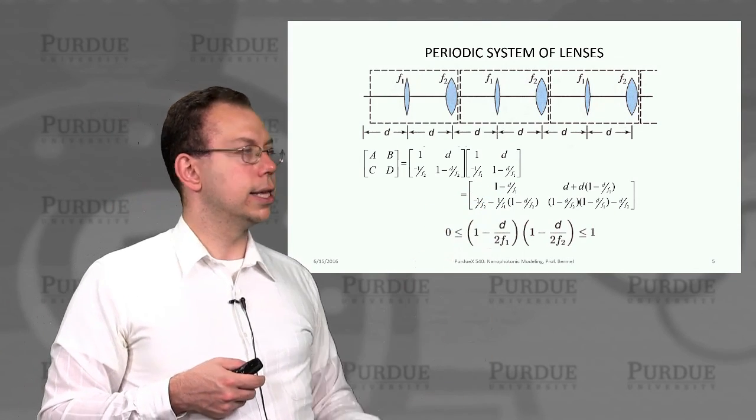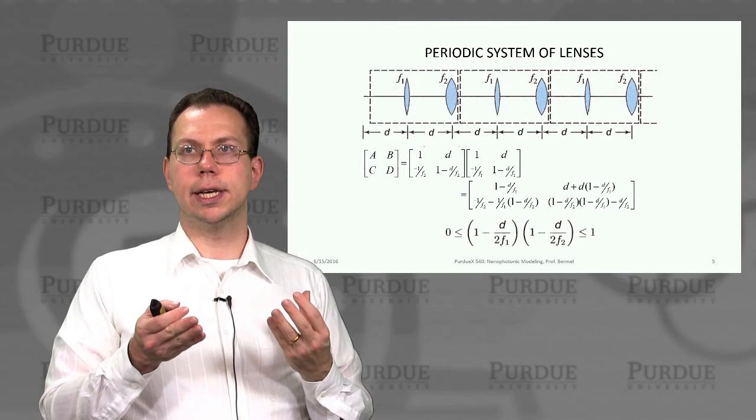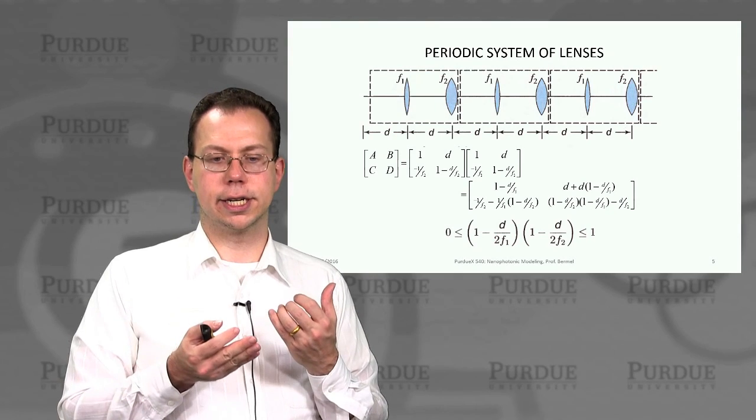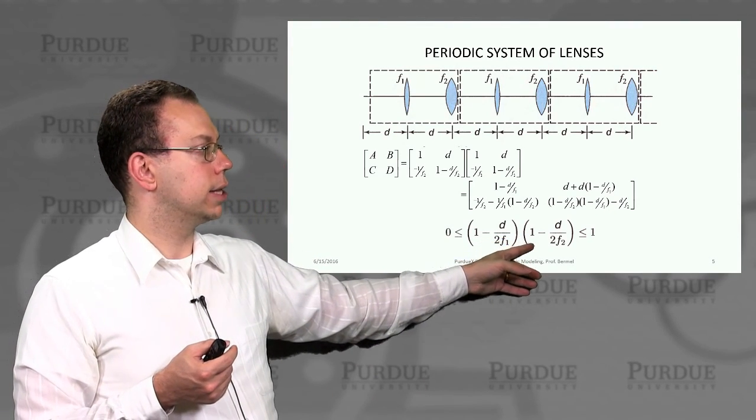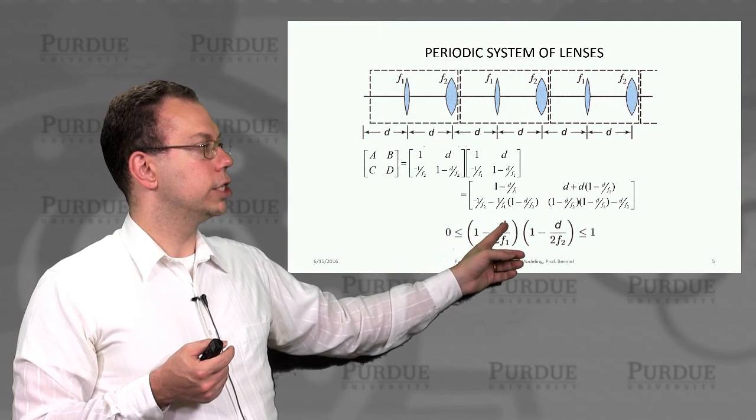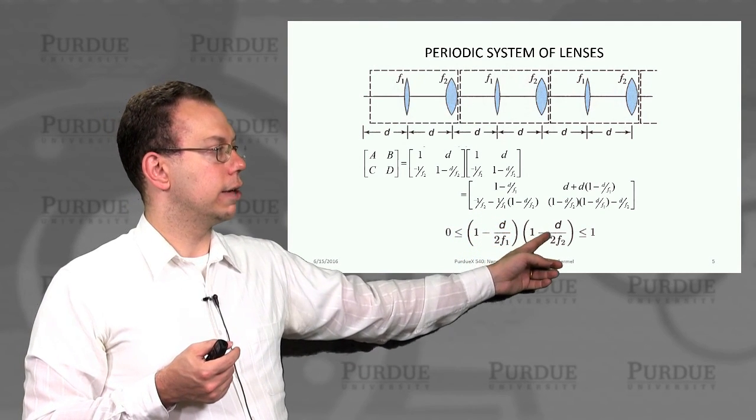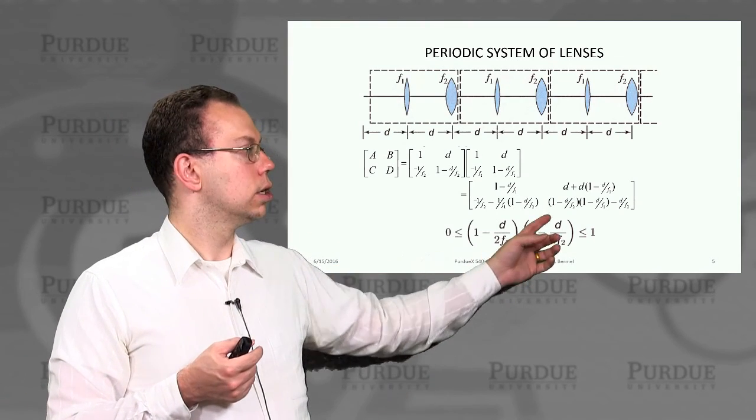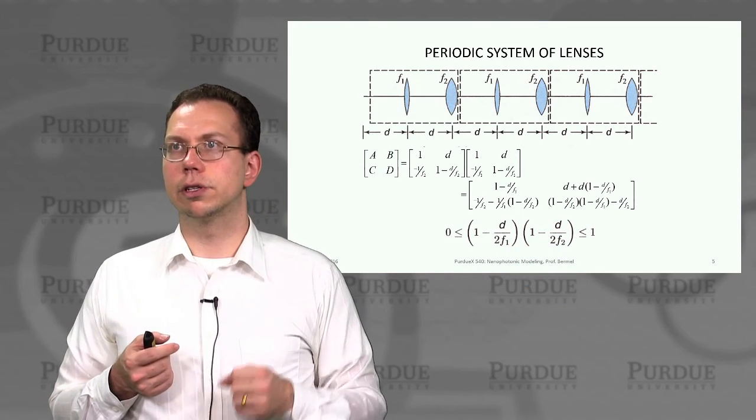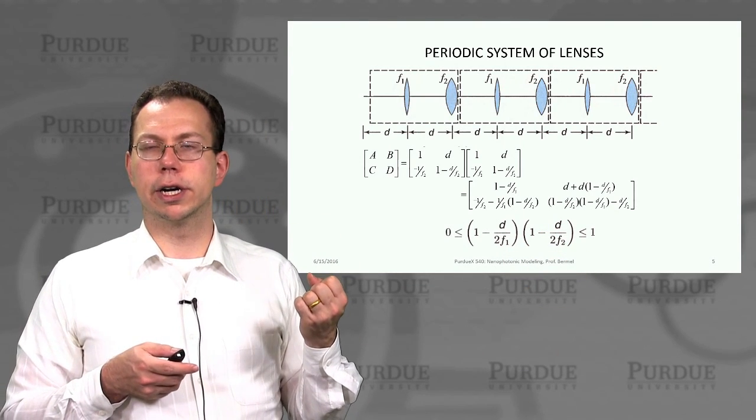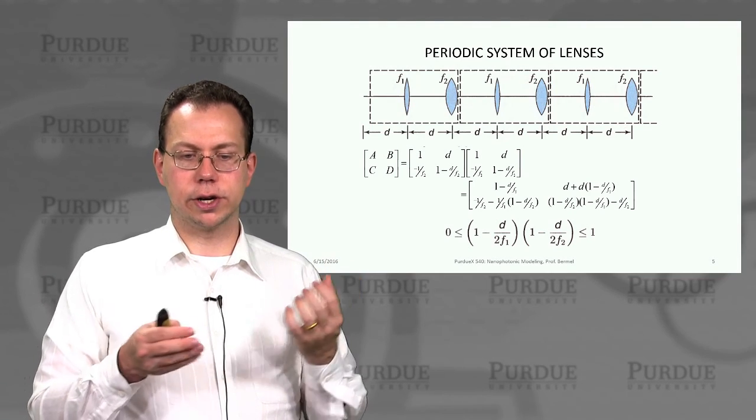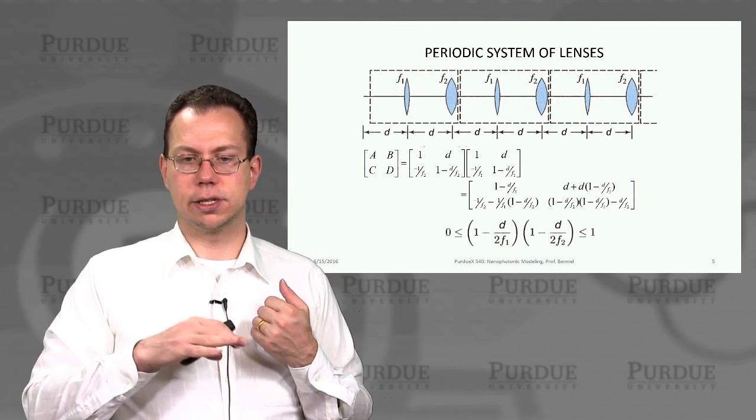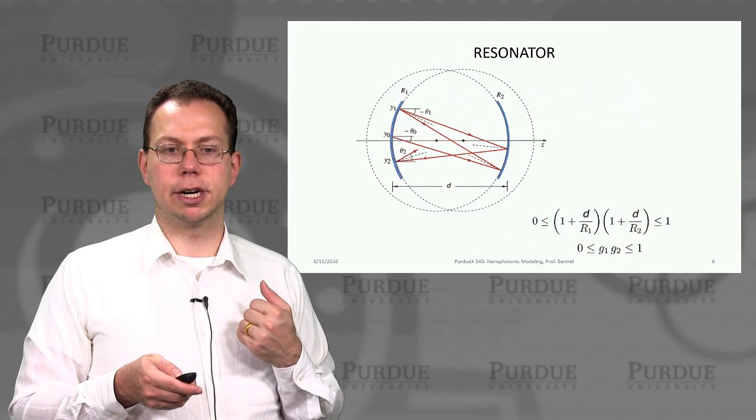Multiply those together, then you get this. There's a stability condition which is that A plus D absolute value must be less than or equal to 2. That condition tells us that you need the ratio of D over F1 and D over F2 to be large enough so that this overall term can be less than or equal to 1, but also it has to be small enough so it can be greater than or equal to 0. If it doesn't fall within that range, then it will be an unstable transmission, so you can't propagate through a large number of periods that way.